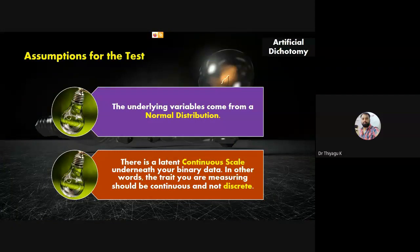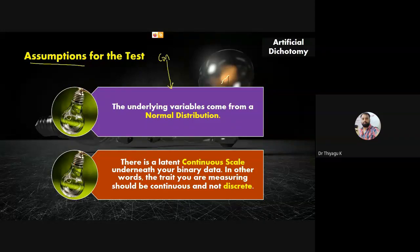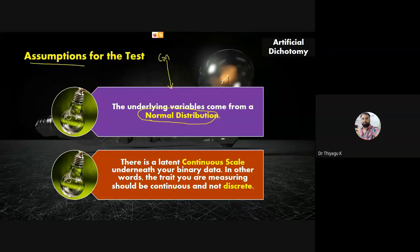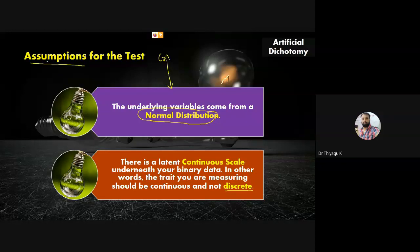For tetrachoric correlation, there are two assumptions. First, the variable is a continuous scale — interval scale — but for research purposes we divide it into categorical format. Second, the distribution should be normally distributed. There is a latent continuous scale underneath the binary data — the trait being measured should be continuous, not discrete. If you measure it in a discrete manner, it cannot be categorized into groups. These assumptions should be checked before attempting tetrachoric correlation.